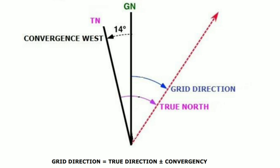The formula is: grid direction equals true direction plus or minus convergency. So if you want to find grid direction, apply convergency to the true direction.